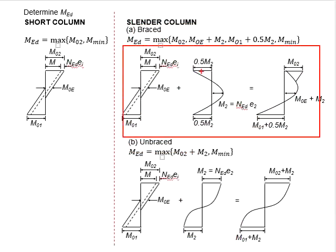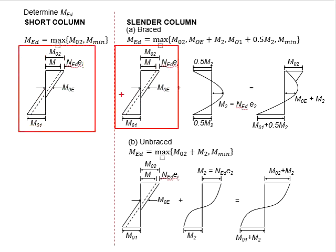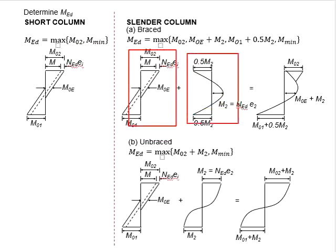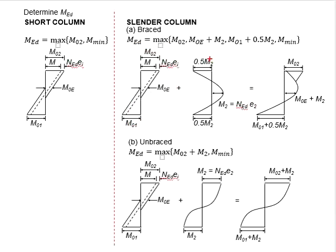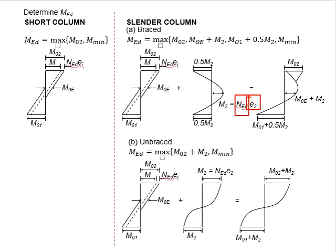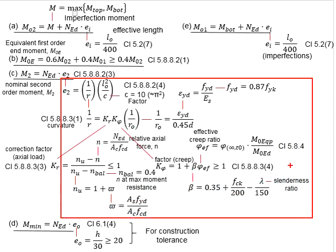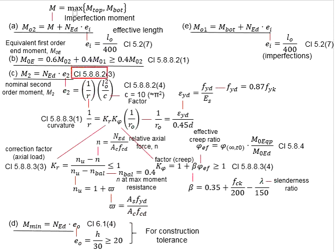Now we look into the diagrams for the braced slender columns. The first diagram is totally identical to the short columns. On top of the existing moment, there will be a second order moment caused by the buckling of the braced column. Based on the moment distribution profile, this will be M2 at mid-height and 0.5 M2 at the top and bottom of the columns. M2 is determined by multiplying N_ED times e2, where e2 is related to the curvature of the buckling of the columns. This can be referred from clause 5.8.8.2(3) in Eurocode 2.